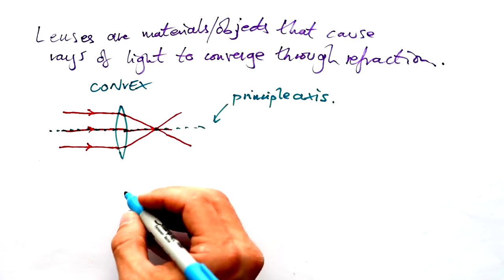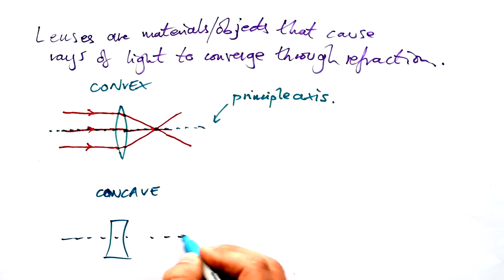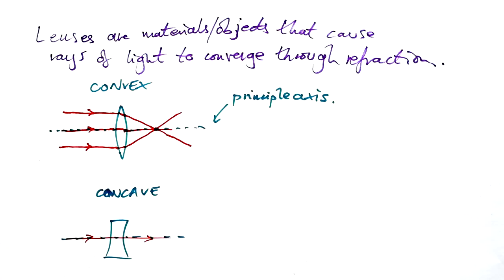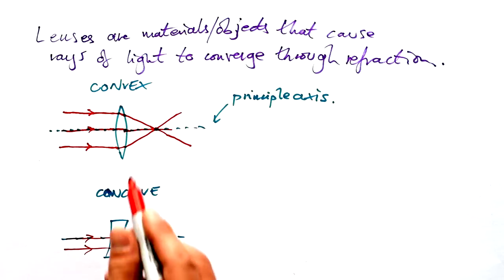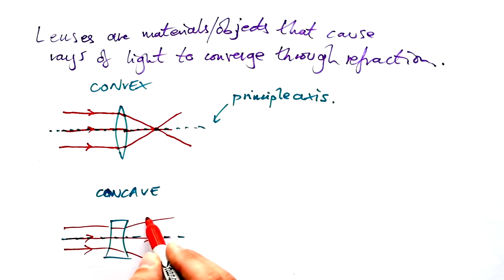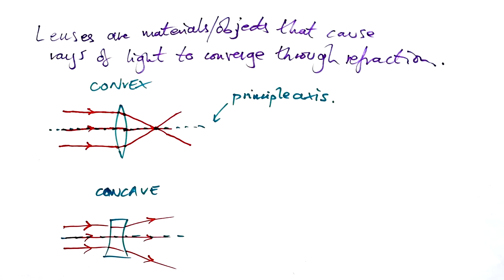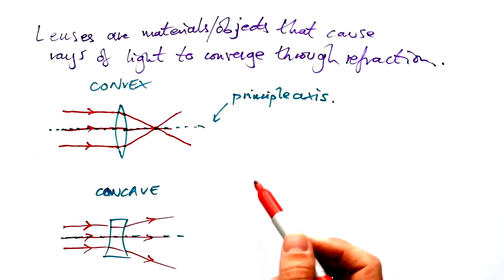What about a concave lens? There's our principal axis again — a light ray going along it just goes straight through. However, a light ray going off-center gets refracted in the opposite direction to a convex lens, ending up going out like that. You might notice these rays are not converging at all — they're actually spreading out, they're diverging. Yes, that's right, but we'll talk about that in a second.